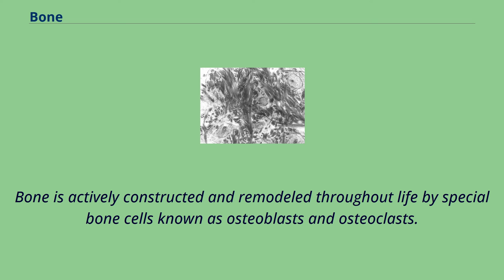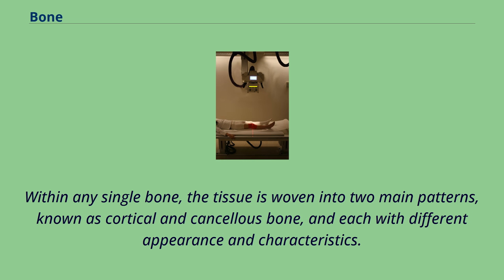Bone is actively constructed and remodeled throughout life by special bone cells known as osteoblasts and osteoclasts. Within any single bone, the tissue is woven into two main patterns known as cortical and cancellous bone, each with different appearance and characteristics.